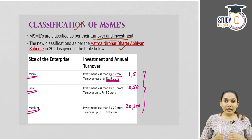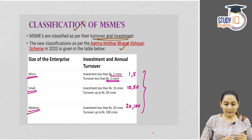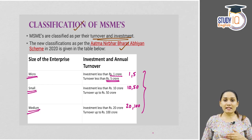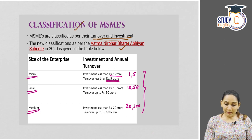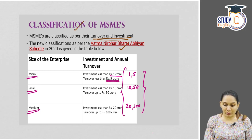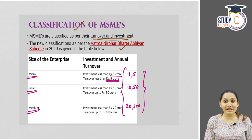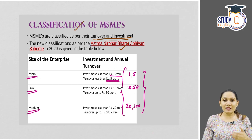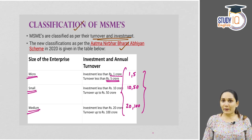In the new classification for MSME, both turnover as well as investment are taken as criteria for the latest classification as per the ministry. A useful trick: remember 1 and 5 for micro, then add a zero to get 10 and 50 for small, and double those to get 20 and 100 for medium. Maybe this can be a question in the prelims exam.